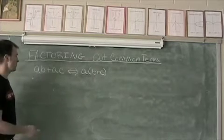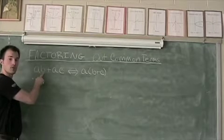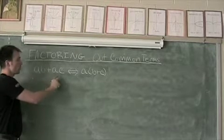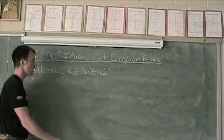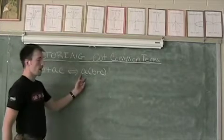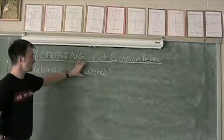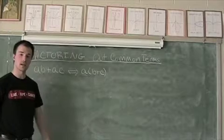To give it an algebraic look, if we have some quantity A times another quantity B, plus some quantity A times another quantity C, that's the same thing as pulling out this A from both of our terms and making it A times the quantity B plus C.